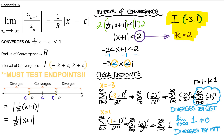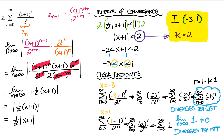If this were free response and you didn't show that you checked the endpoints, you would lose points. So you have to show that you have checked the endpoints when using the ratio test to find the interval of convergence of a power series.